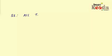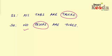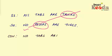Next example: statement one is 'all tabs are trucks' and statement two is 'no trucks are tubes'. The middle term 'trucks' is distributed in statement two, and both statements are properly aligned, so they pass rules one and two. Deducting the middle term, A plus E gives an E type statement, so the definite conclusion is: no tabs are tubes.